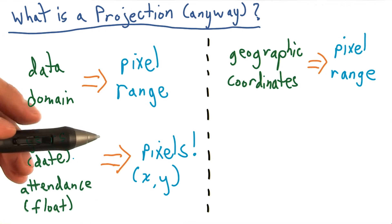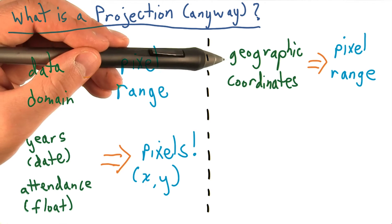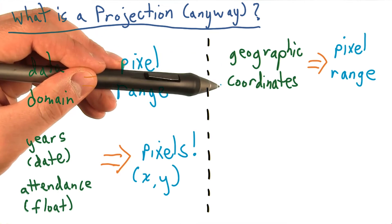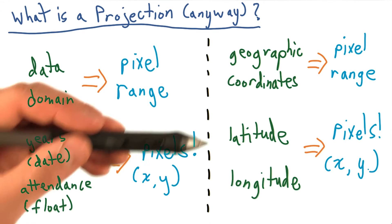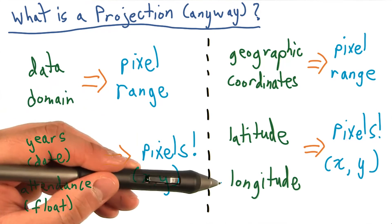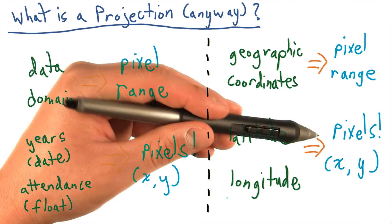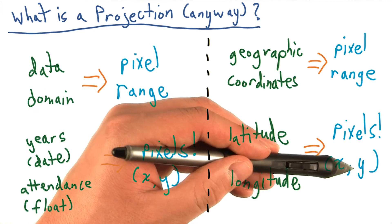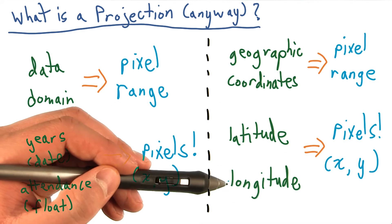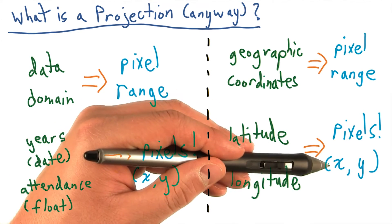And for our map, we do exactly the same thing, except this time we're going from geographic coordinates to an associated pixel range. Or more specifically, we're going from a latitude and a longitude coordinate to pixel values. The latitude actually corresponds to the y-coordinate, and the longitude corresponds to the x-coordinate.